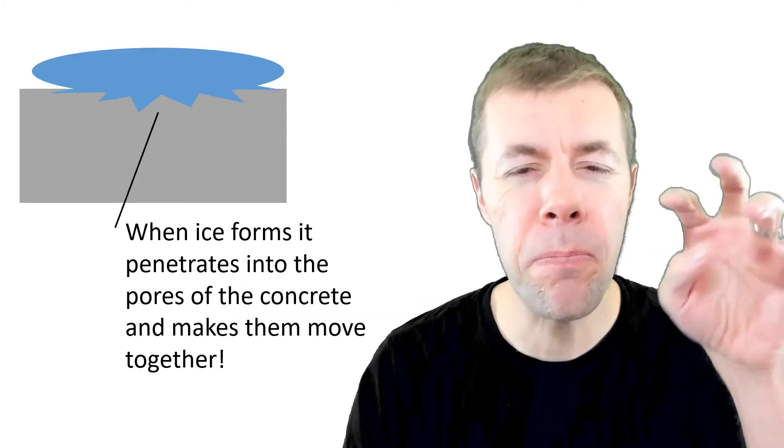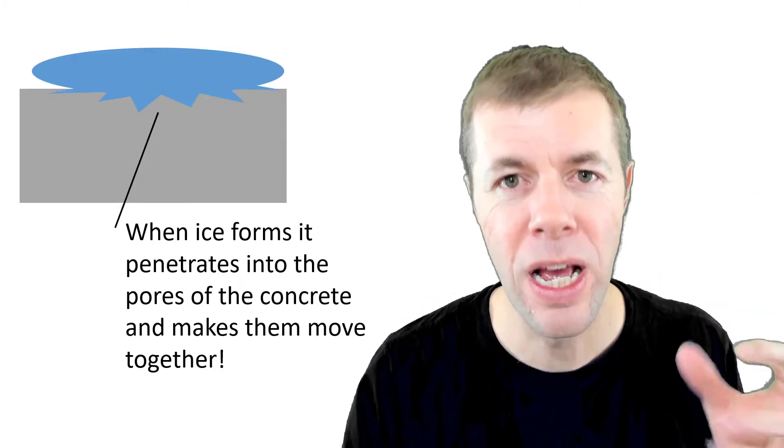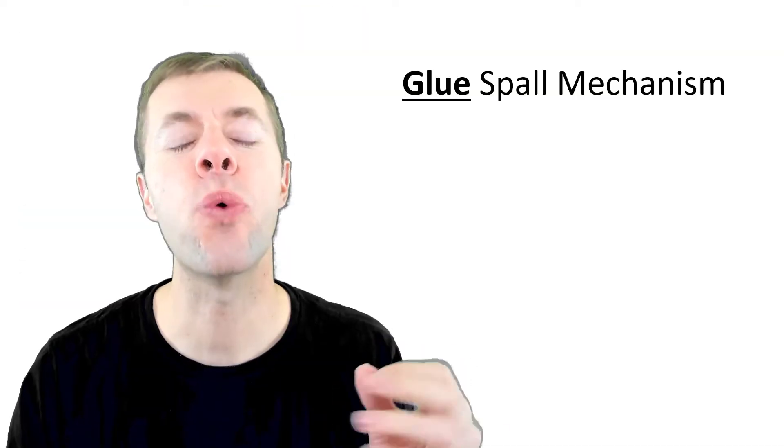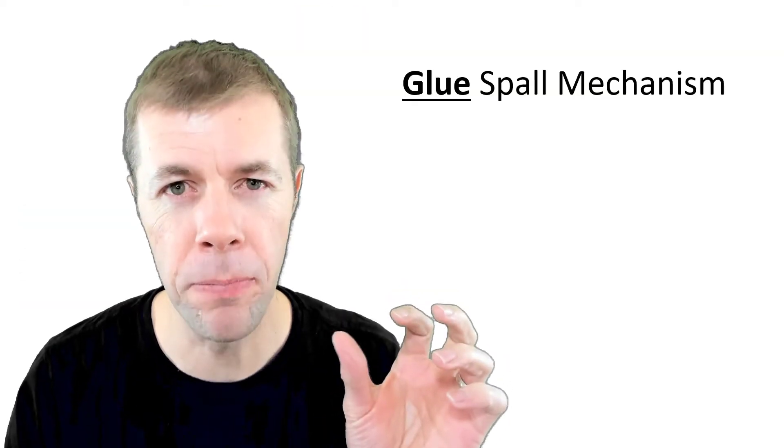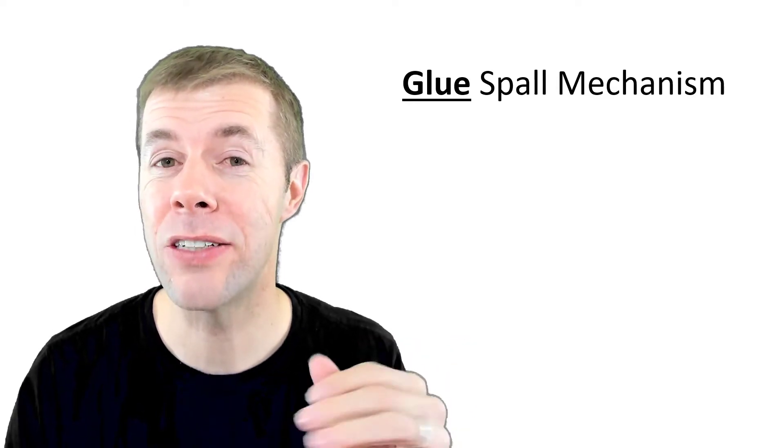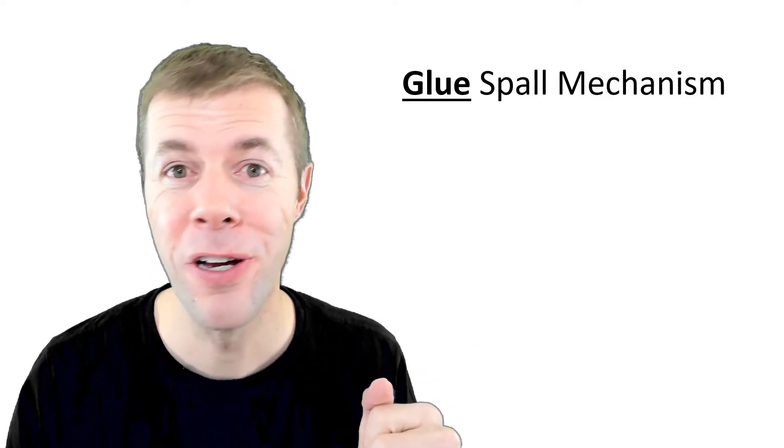That ice will actually penetrate the pores inside the concrete and hold them together very tight. This is kind of like glue, and it's kind of like what happens when you stick your tongue to a freezing pole and get stuck. Ice crystals actually go inside your tongue and grab onto it. This is where the glue part comes from in the glue spall mechanism name. The ice glues itself down to the concrete.